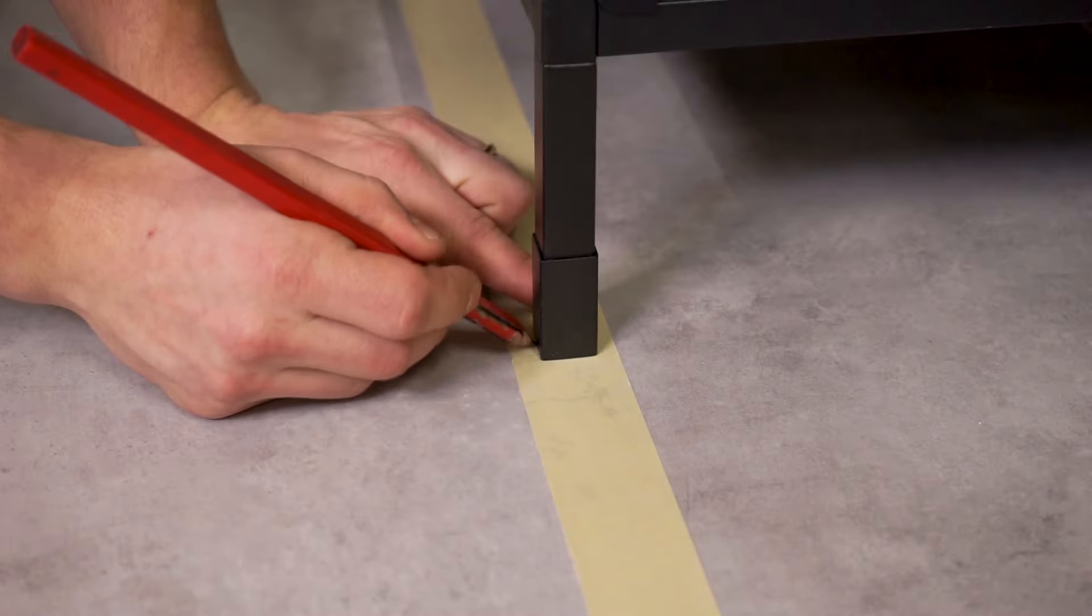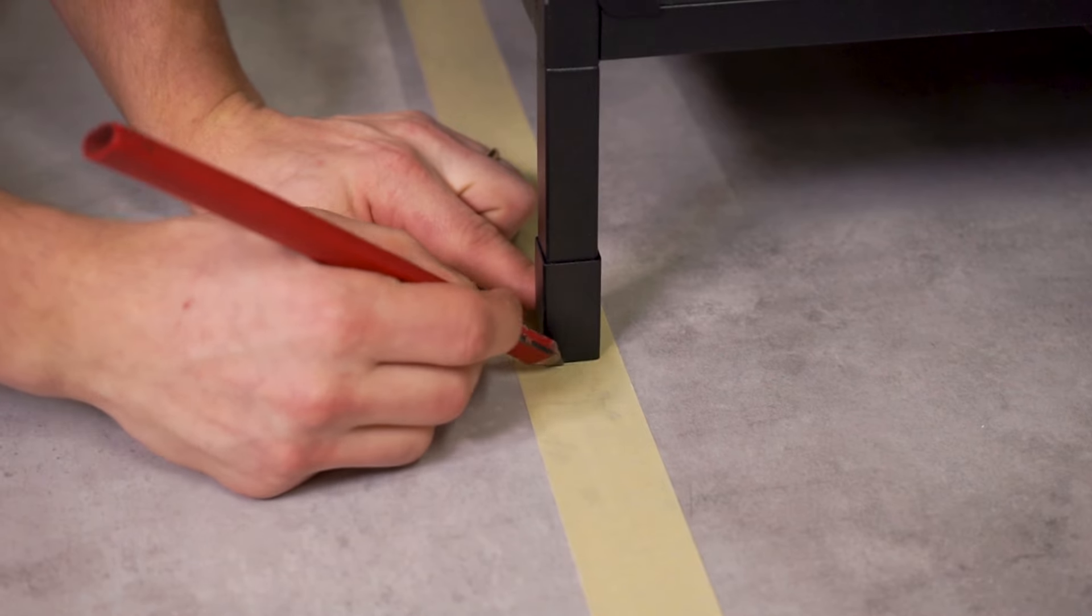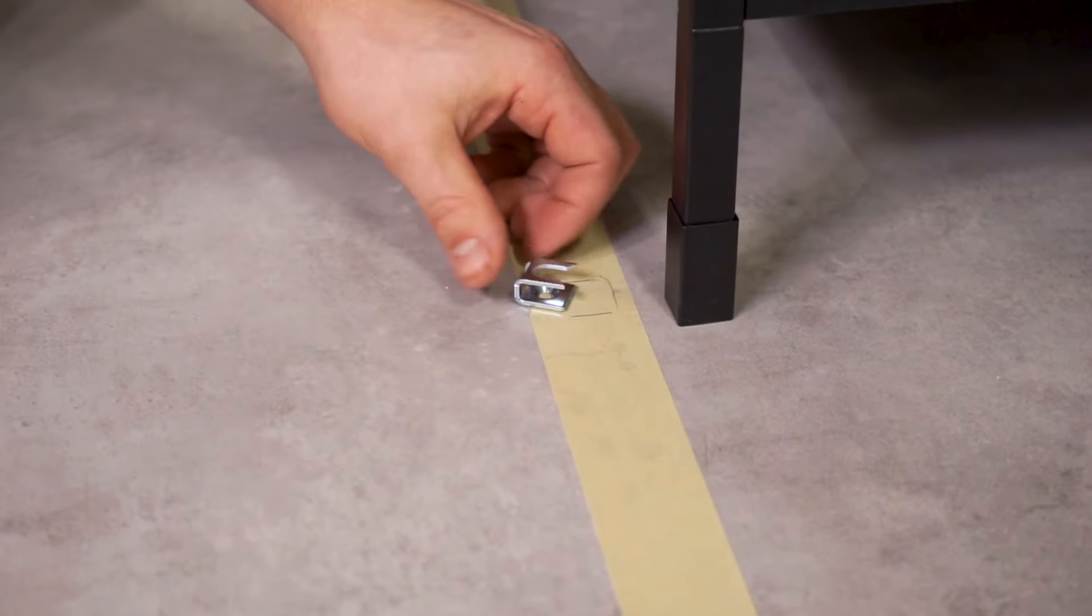Add some temporary tape under each leg, marking the perimeter of each leg sleeve as accurately as you can.